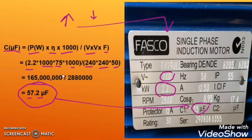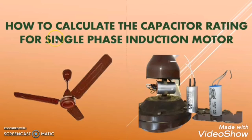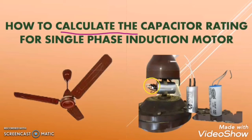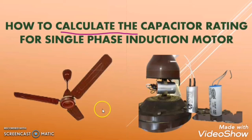I hope you found this video informative and learned something new. If you like my video, please give a thumbs up and subscribe to my channel. Next time, if you want to change the capacitor of your ceiling fan, calculate the capacitor rating first. If you buy a capacitor less than the required rating, the fan speed will be very low, and if you buy one more than the calculated value, the motor will heat up fast and it will reduce the lifespan of the motor.